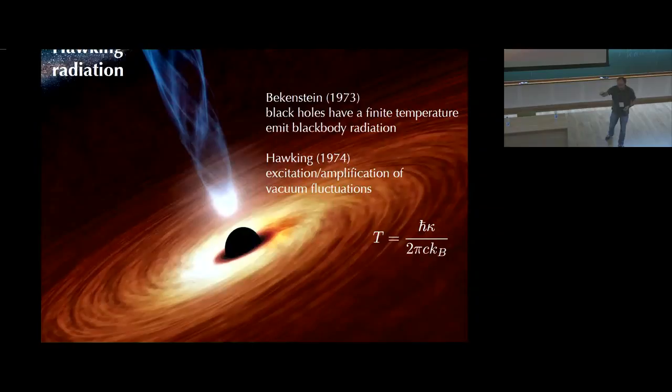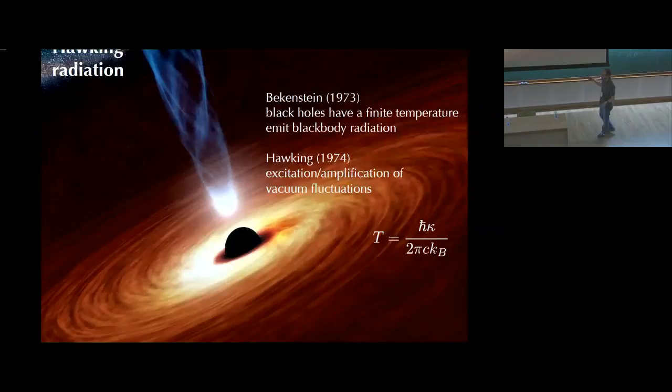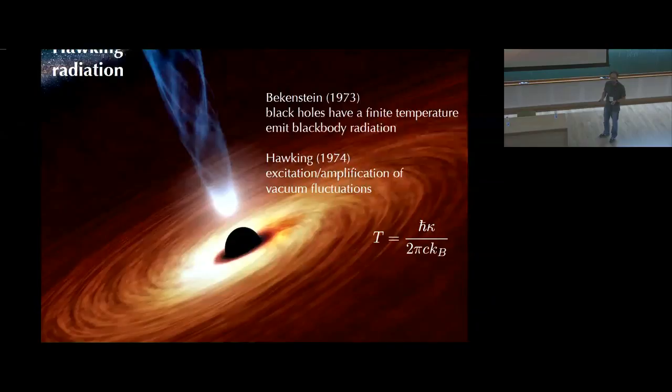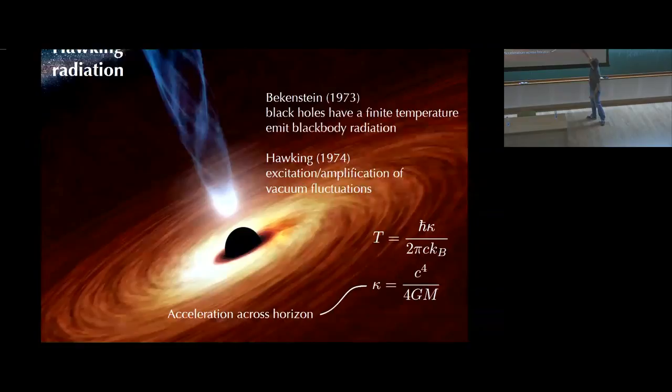Kappa is what is usually called the surface gravity of a black hole — essentially the acceleration around the horizon. This surface gravity is typically extremely small. If you have a really big black hole, as you fall through the horizon you won't really notice it — the tidal forces can be extremely weak, the curvature there doesn't have to be strong. This means the temperature can be extremely low. The Hawking temperature is given by kappa — the acceleration across the horizon.